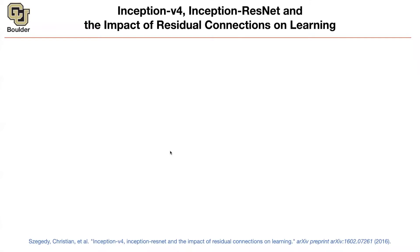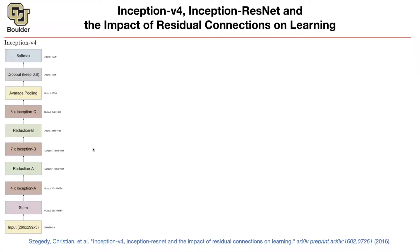They actually got improvements with residual connections. This is the macro structure of an Inception V4 network. The input is 299 by 299 with three channels. It goes through a stem which takes the 299 by 299 image and outputs 35 by 35 by 384 channels. Then you have four Inception A blocks, then a Reduction A, seven Inception B blocks, and then a Reduction - whenever you have a reduction, the dimensions go down. From 35 you go to 17 after reduction.